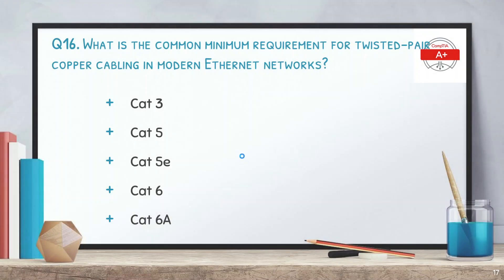Question 16: what is the common minimum requirement for twisted pair copper cabling in modern Ethernet networks? Options are Cat 6, Cat 5, Cat 5e, Cat 6, and Cat 6a. The correct answer is Cat 5e.